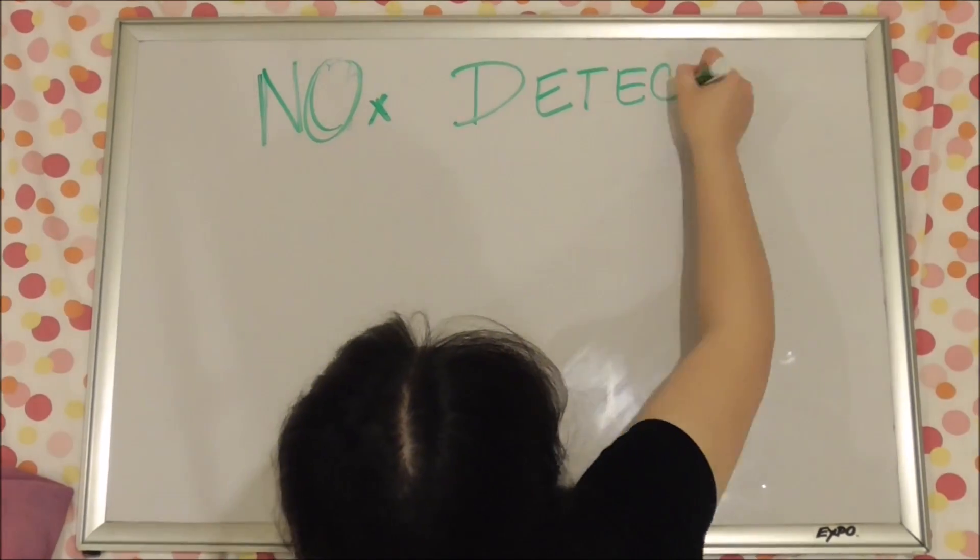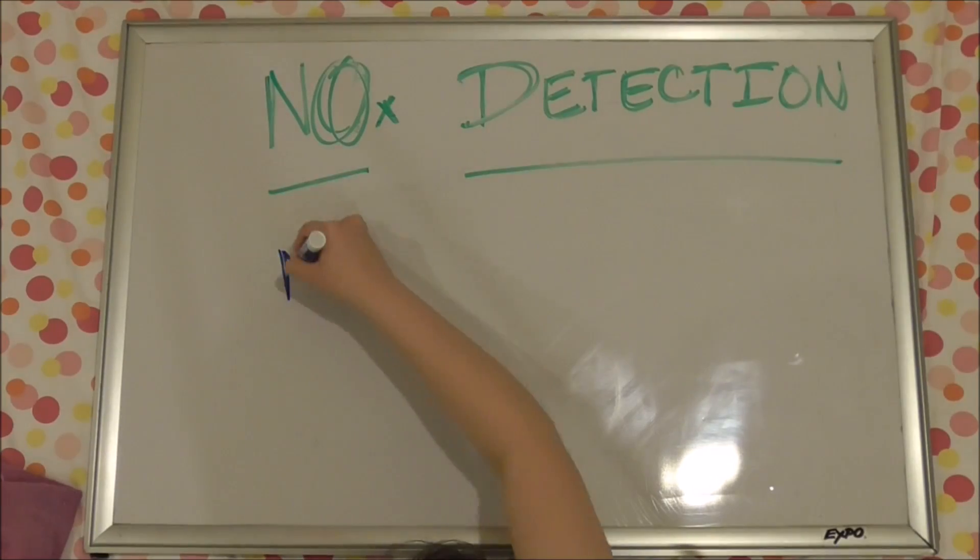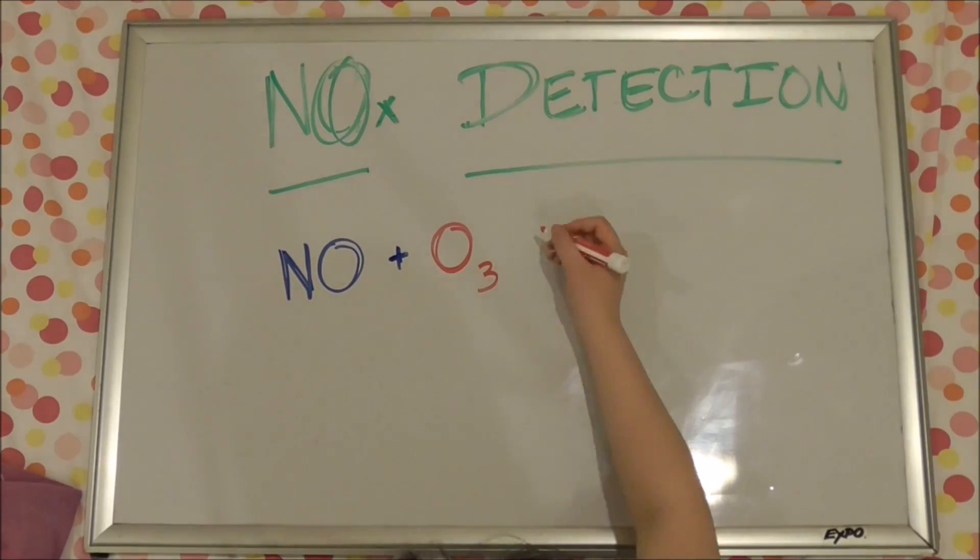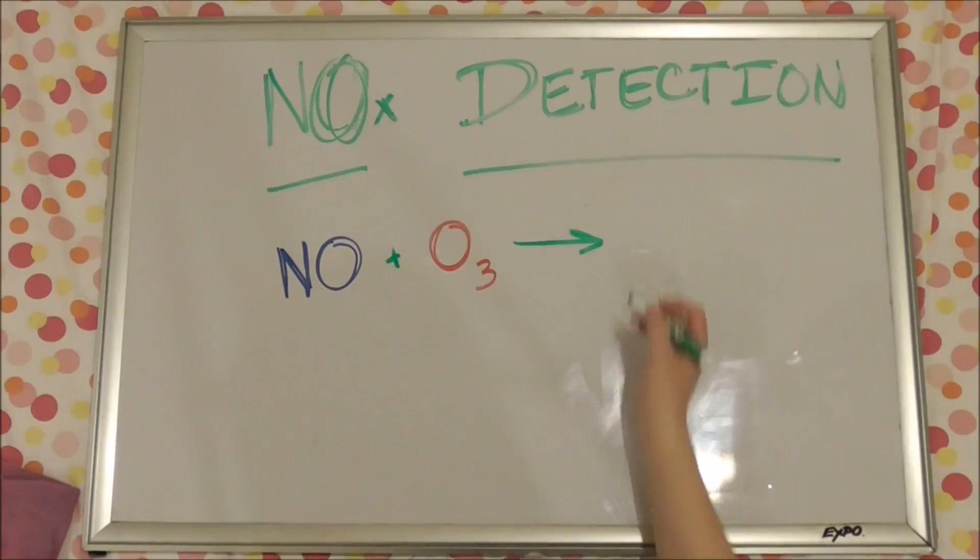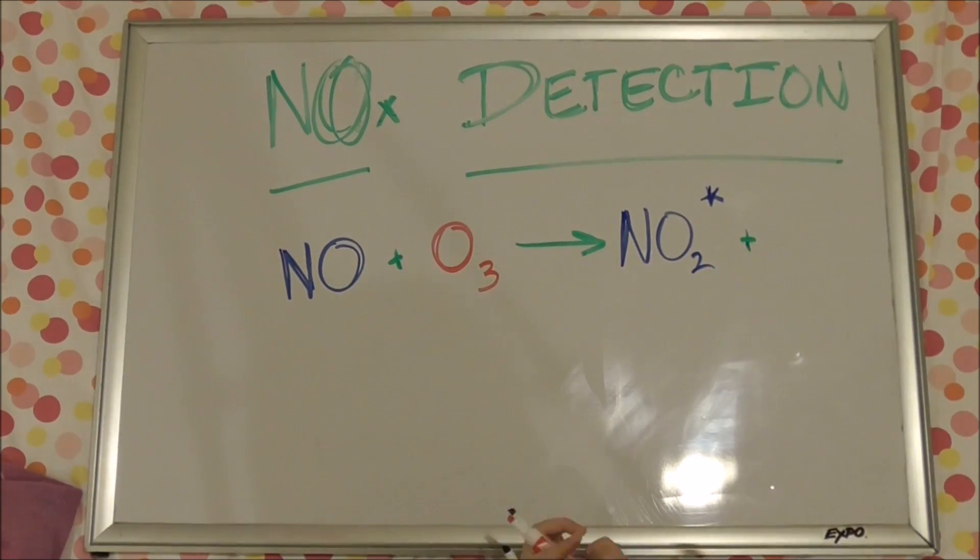So then how do we use this method to detect NOx? Well first you have to remember, when nitric oxide NO mixes with ozone O3, it produces nitrogen dioxide in a high energy level state and O2 molecules.